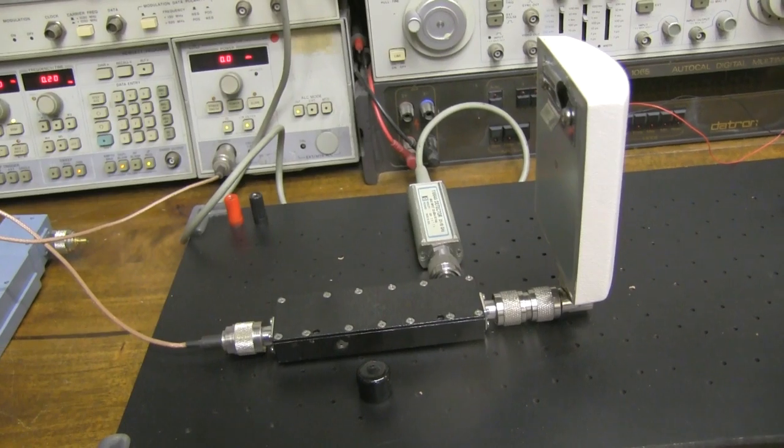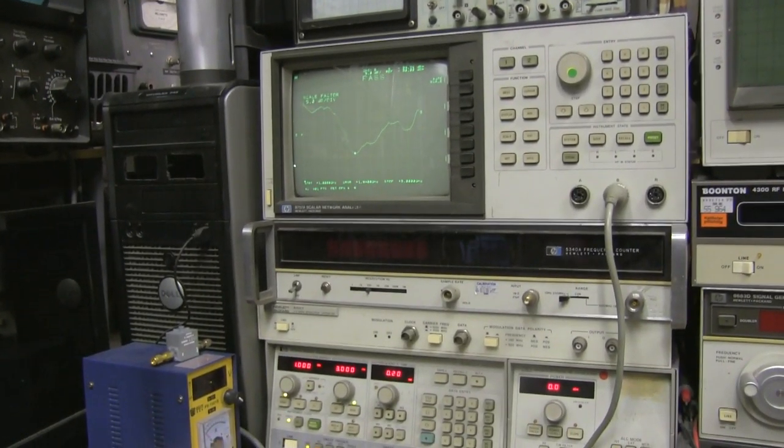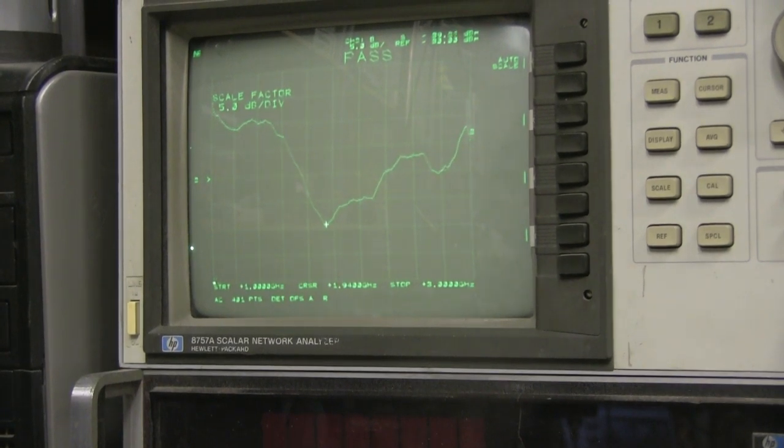Here's the antenna on the test setup, and here's the output on the network analyzer. That's a beautiful response for 2.4 GHz WiFi. I've got the cursor on 2.4 GHz, and you can see where it dips. Either side of that, it's a beautiful response.